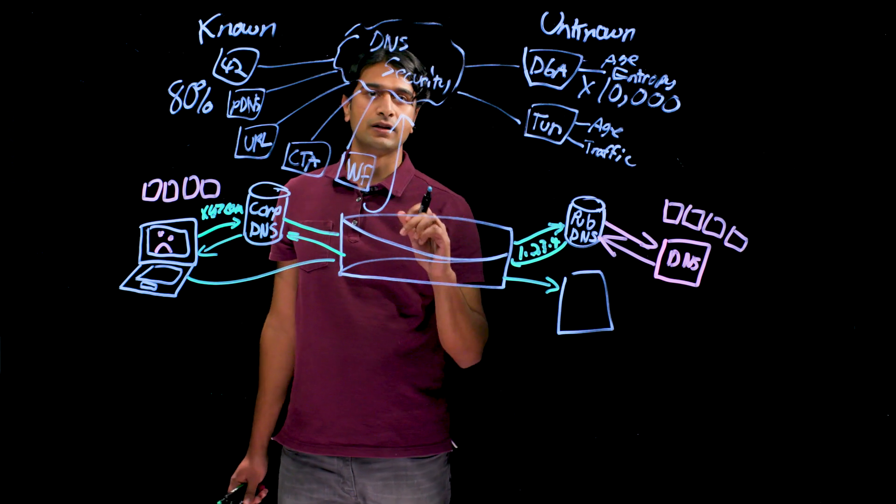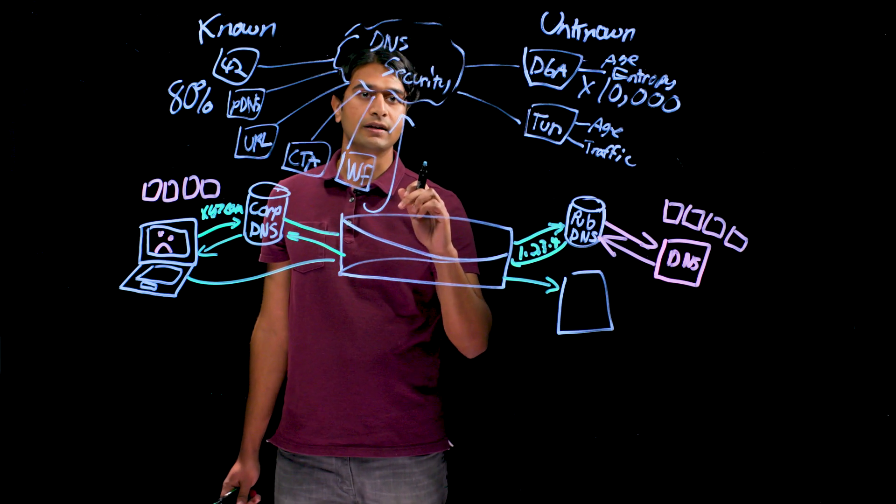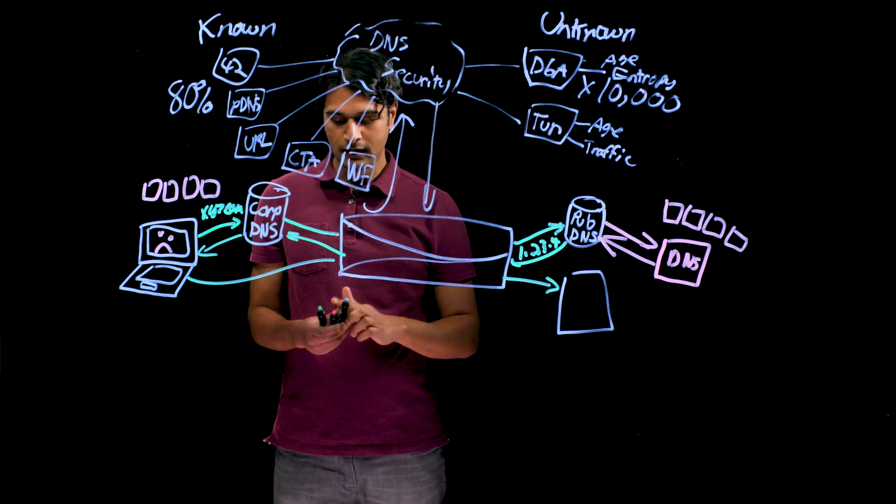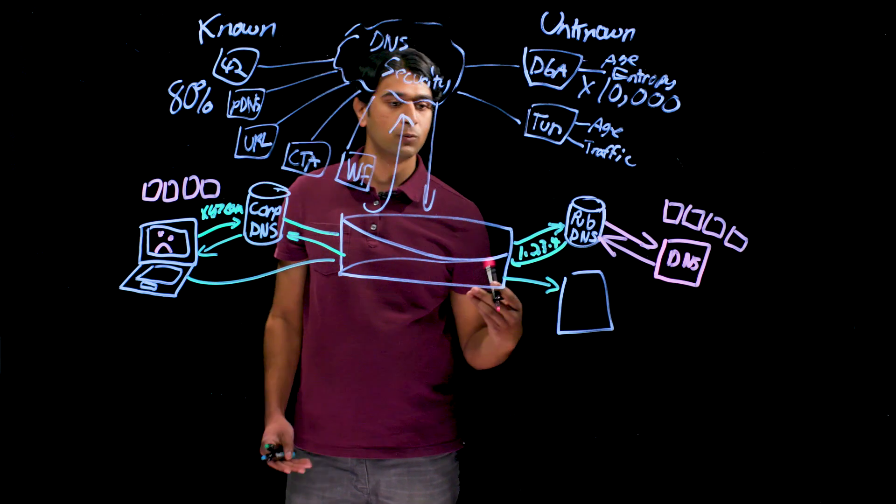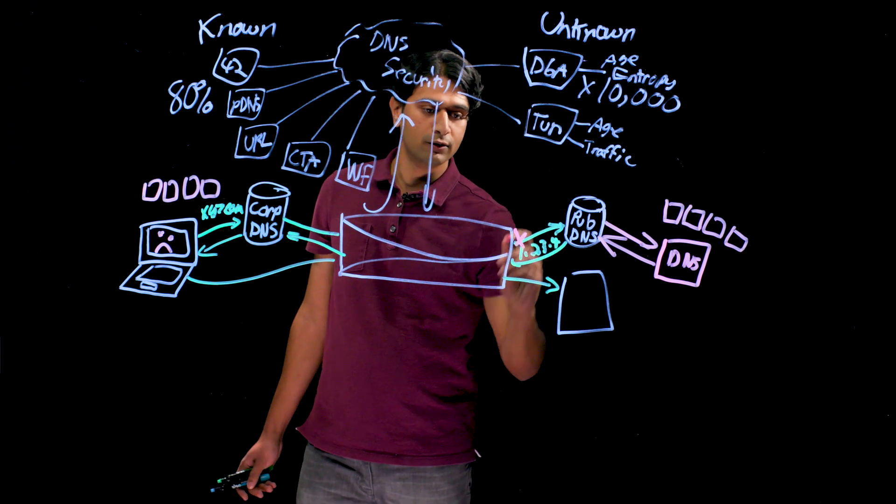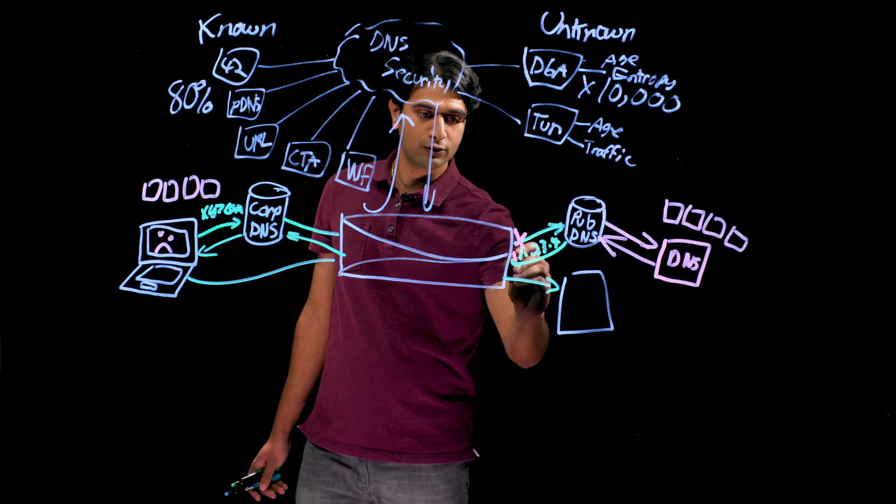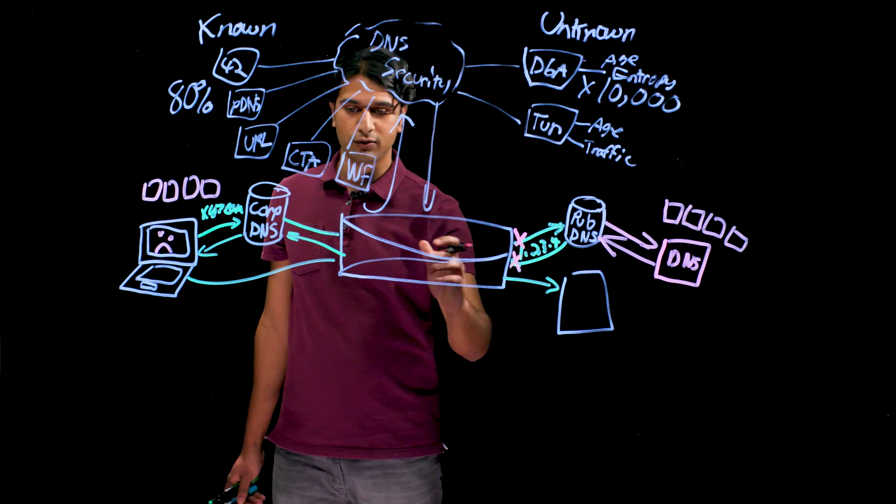Once the DNS security cloud has come to a verdict decision, it will send that verdict back to the next generation firewall, at which point the next generation firewall will block and drop any further DNS requests to that malicious domain, and drop and sinkhole any pending responses.